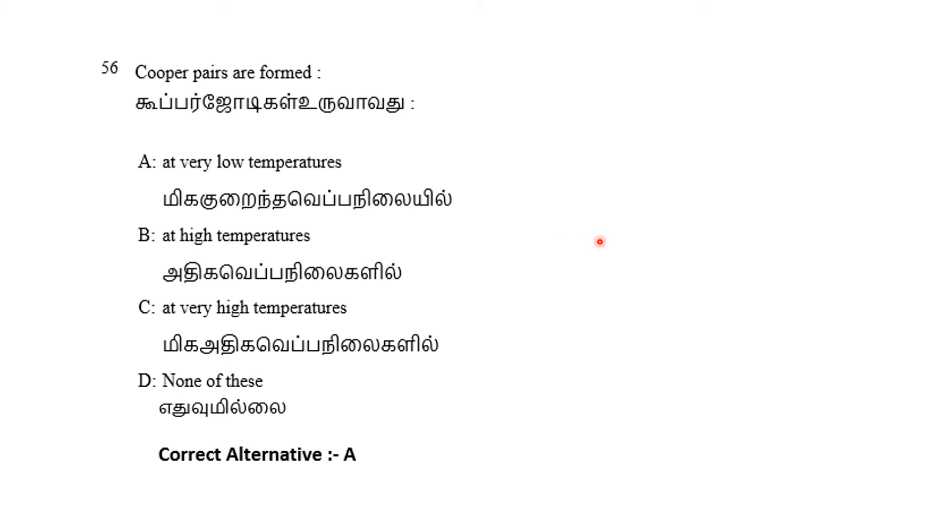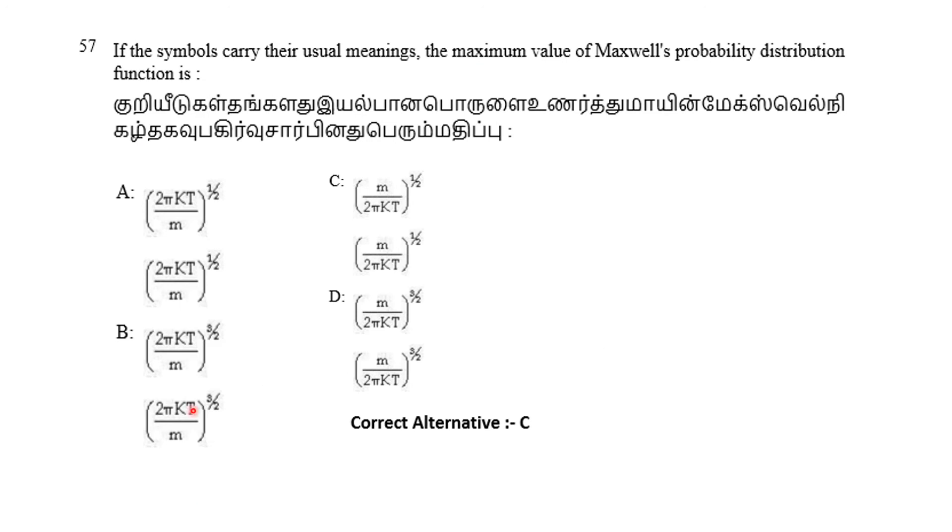In BCS theory of superconductors, the effective net attraction between the normally repulsive electrons produces a pair binding energy on the order of milli electron volts, enough to keep them paired at extremely low temperatures. So the pair of electrons are bound together at low temperature. Option A is the correct answer.